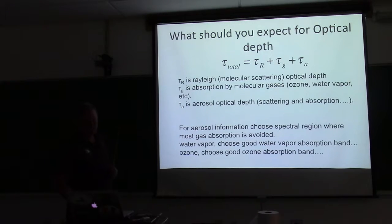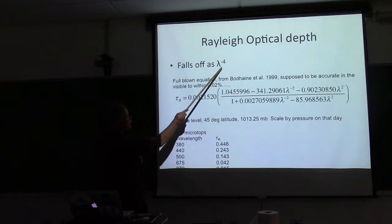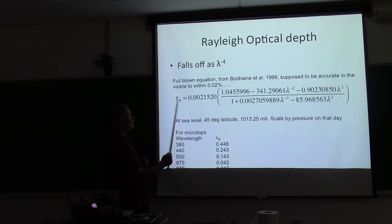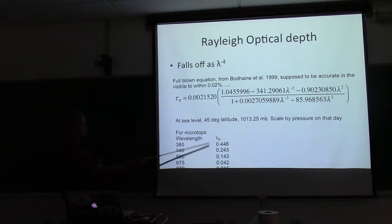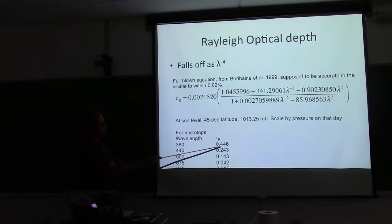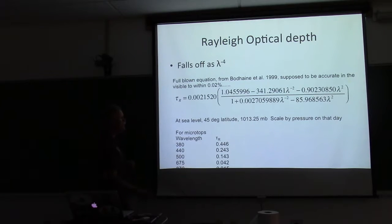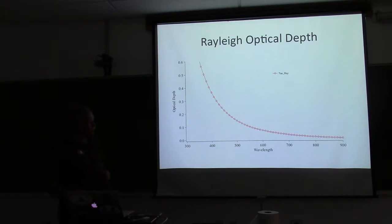Aerosol optical depth is sort of the unknown in the climate modeling world. Rayleigh optical depth falls off as lambda to the minus four. Here's the most recent equation I could find — it's supposed to be accurate to within two hundredths of a percent. For the microtops wavelengths — 380, 440, 500, 675, and 870 nm — here's the Rayleigh optical depth scaled to the pressure we had on Wednesday during the cruise. The microtops gives you the pressure, so you can scale the Rayleigh optical depth accordingly.